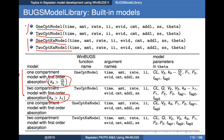The arguments are the same for all these models: time, amount, and so on. What differs from one model to the next are the model parameters contained in the theta vector.